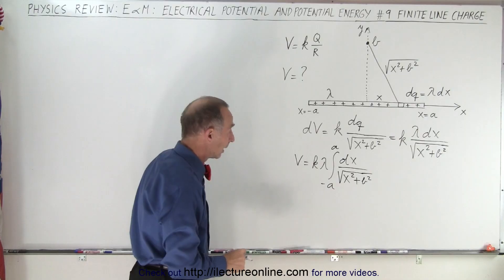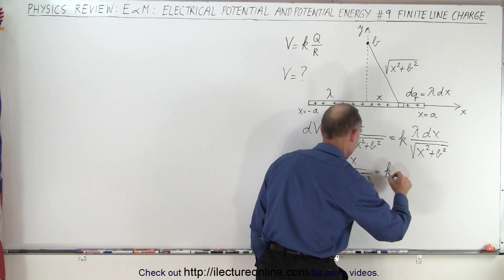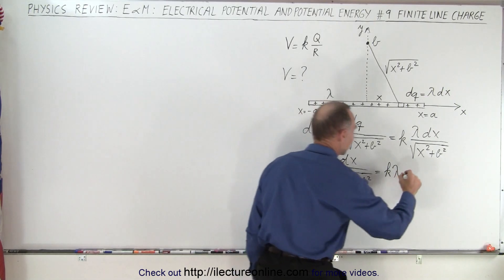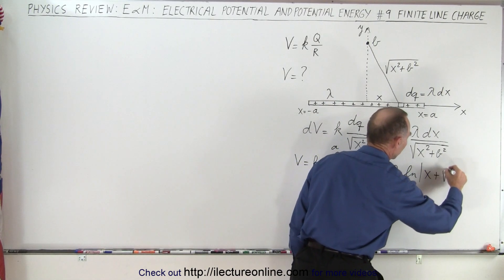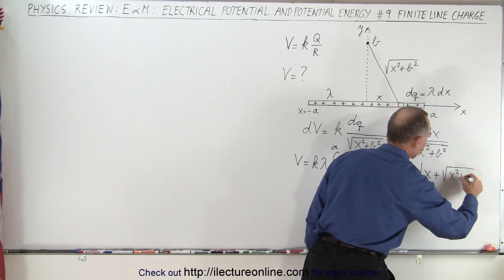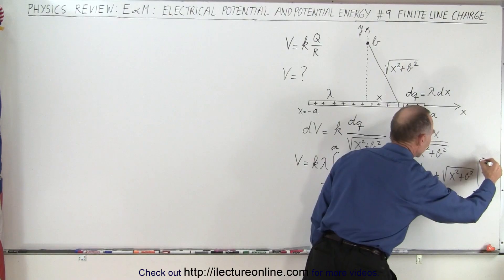Now we need to integrate that and so you can find that integral to be k lambda times the natural log of x plus the square root of x squared plus b squared, and then we're going to evaluate that from minus a to a.